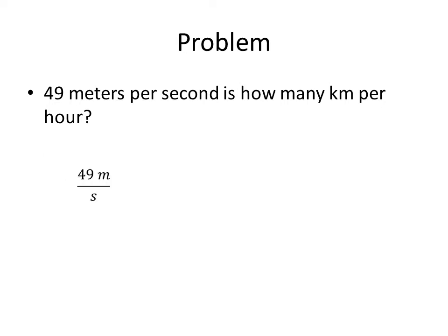To do this problem, we need to first start with our given. You notice it says 49 meters per second. Second is after the per, so it goes in the denominator. Now I need to convert this to kilometers per hour. That means I need to have kilometers in the numerator and hour in the denominator. There's two conversions here. One conversion is from meters to kilometers, and the other is from seconds to hours. You can do all of these in one mathematical sentence. You don't have to break it up into individual conversions.